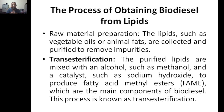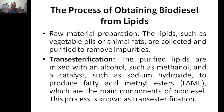The process of obtaining biodiesel from lipids: first, raw material preparation — lipids such as vegetable oils or animal fats are collected, purified and checked for impurities. Next, transesterification — the purified lipids are mixed with alcohol such as methanol, and a catalyst such as sodium hydroxide is added. This produces fatty acid methyl esters, which are the main components of biodiesel. This process is known as transesterification.